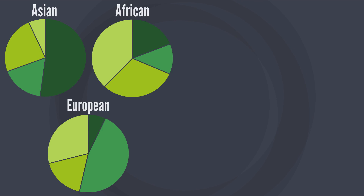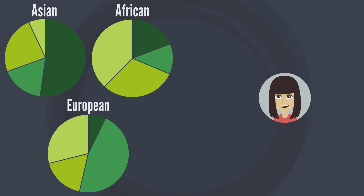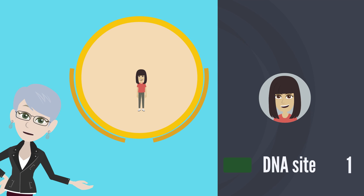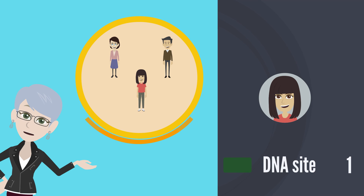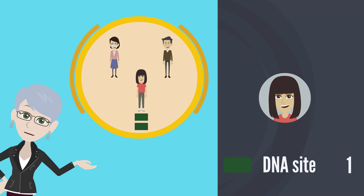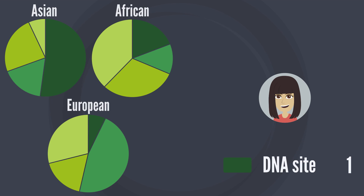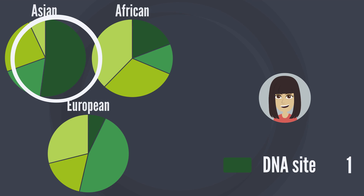Let's take a closer look at how this works. After analyzing Daisy's DNA code, the company found that she has the dark green variant at this specific DNA site. Remember how Daisy inherited her DNA from both of her biological parents? For each DNA site, Daisy has two variants — one from each biological parent. The dark green variant is found in all three reference populations, but since it is more common in people with Asian ancestry, it is more likely that Daisy shares ancestry with them.